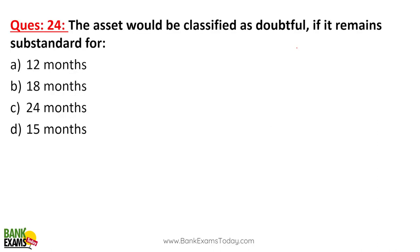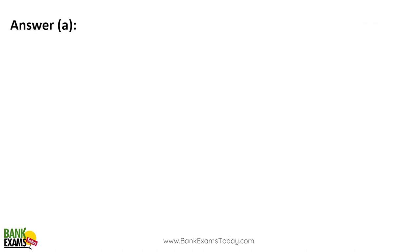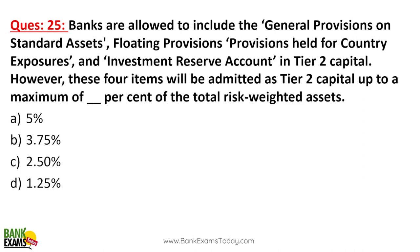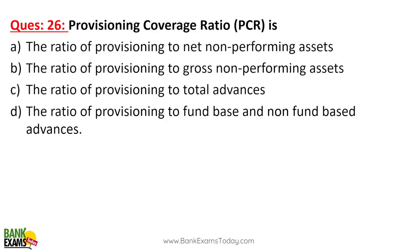An asset is classified as doubtful if it remains substandard for 12 months, after which it becomes a loss asset. Banks are allowed to include general provisioning on standard assets, floating provisions, provisions held for country exposures, and investment reserve account — the total of these can be up to 1.25% of Tier 2 capital, subject to a maximum of 1.25% of total risk-weighted assets. The PCR (Provisioning Coverage Ratio) is the ratio of provisioning to gross NPA.